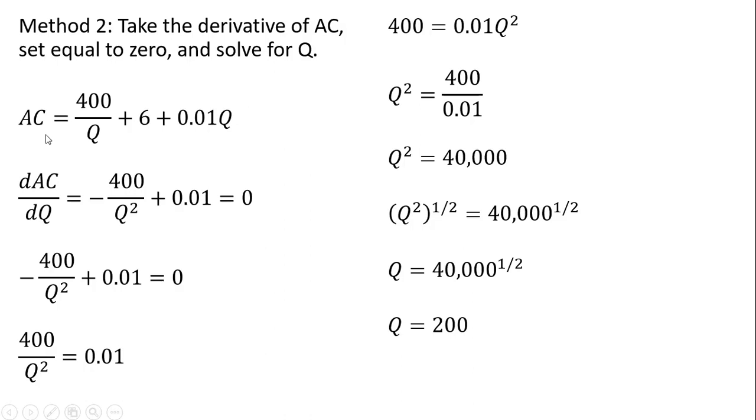So as we already found, average cost equals the following. Just taking total cost and dividing it through by q. Now I'm going to take the derivative of this expression. So using the quotient rule, the derivative of 400 divided by q is minus 400 divided by q squared. The derivative of 6 is 0, and then the derivative of 0.01q is just 0.01. And then we're going to set that derivative equal to 0.